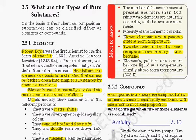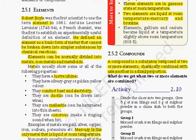Pure substances are classified as elements or compounds. Robert Boyle defined elements as basic forms of matter that cannot be broken down into simpler substances by chemical reaction. Elements are divided into metals, non-metals, and metalloids. Metals are usually lustrous with silver-gray or golden-yellow color, they conduct heat and electricity, are ductile (can be drawn into wires), malleable (can be hammered into thin sheets), and sonorous (make a ringing sound when hit). Examples include gold, silver, copper, iron, sodium, and potassium. Mercury is the only metal that is liquid at room temperature — useful in thermometers.